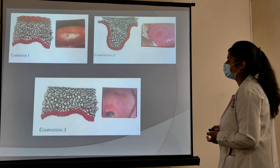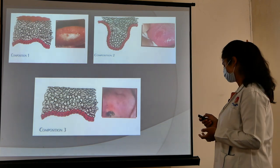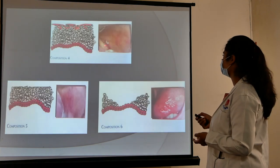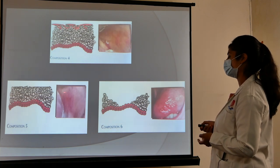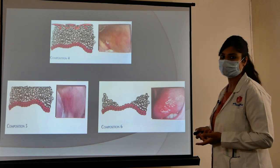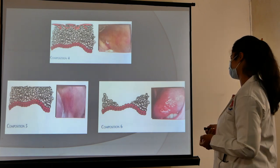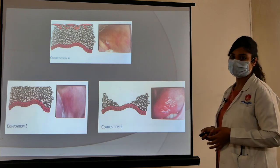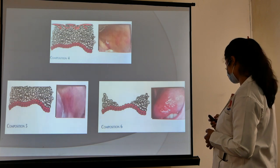The third composition is fluid accumulation between the intracellular and extracellular compartments. Composition four shows necrosis of the epithelium. Composition five shows pseudomembranous growth of fungi on the oral mucosa, as in the case of oral candidiasis. Additionally, decreased vascularity of the cells results in a red lesion appearance.